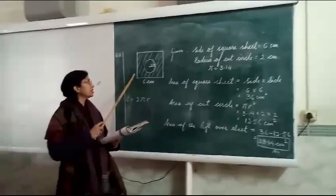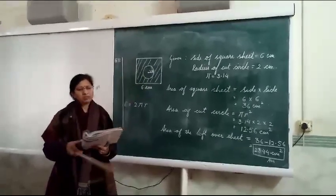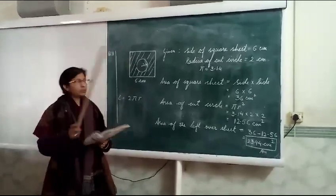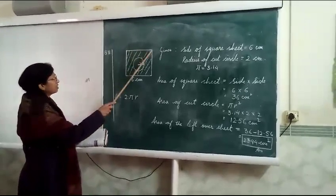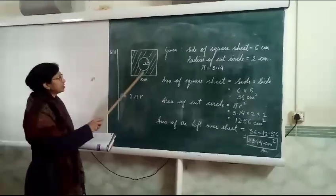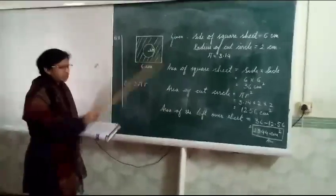This is the square aluminum sheet and its size is 6 cm. What is the area of the leftover aluminum sheet? In this question, an aluminum sheet of square shape is given and one circle is cut out of that with radius 2 cm.